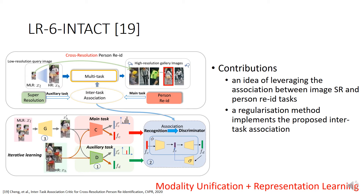The sixth work is Inter-Task Association for Cross-Resolution Person Re-Identification in CVPR 2020. The method combines super-resolution and re-ID modules, but the authors consider that using them in a task-gated manner is unsatisfactory. With the main task being re-ID for high-resolution and generated super-resolution images, and the auxiliary task being super-resolution, the method proposes an inter-task association module between the identity representation FC and the discriminator representation FD, recovering the resolution of low-resolution query images for better matching to high-resolution gallery images.